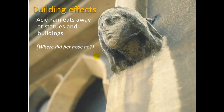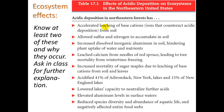Here we see an effect on a building where acid rain has eaten away at this statue's face — where'd her nose go? Many cities are having to restore some of their statues, recasting some, patching up some. Ecosystem effects are pretty severe, and here's a pretty extensive list. You should know at least two of these and why they occur, and you can ask in class for further explanation.